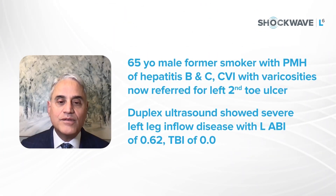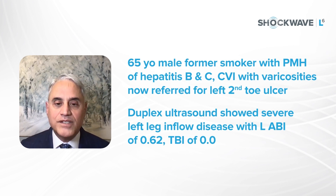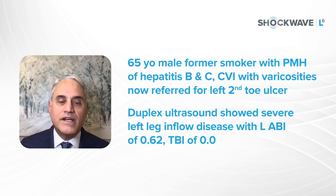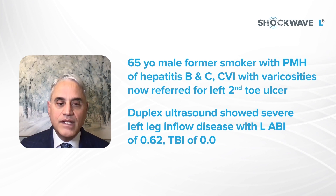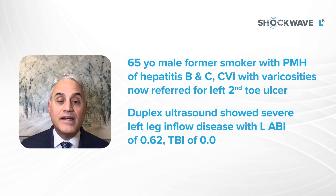This is a 65-year-old former smoker with a history of hepatitis B, hepatitis C, and chronic venous insufficiency with varicosities. He was originally seen because he had developed a left second toe ulcer. Duplex confirmed severe left leg inflow disease with an ABI of 0.62 and a TBI of 0.